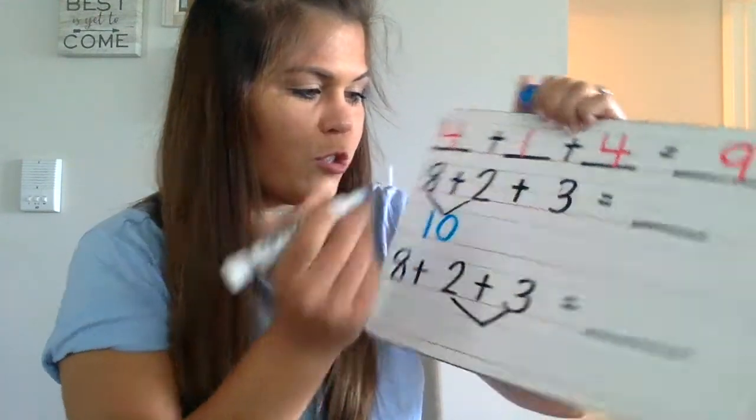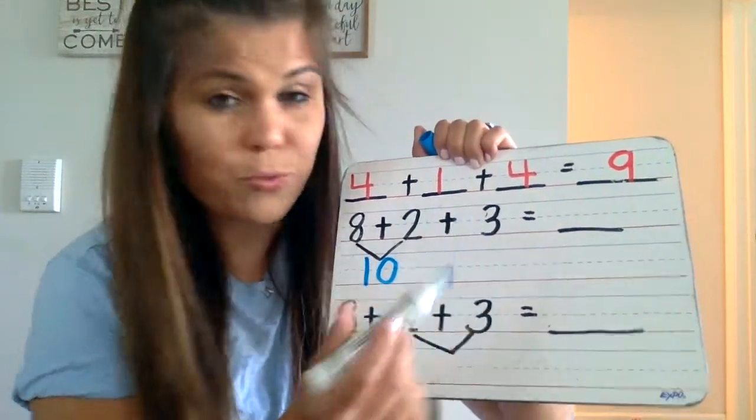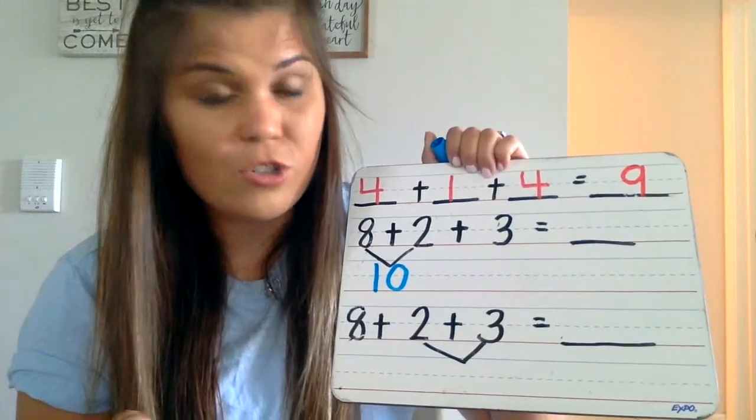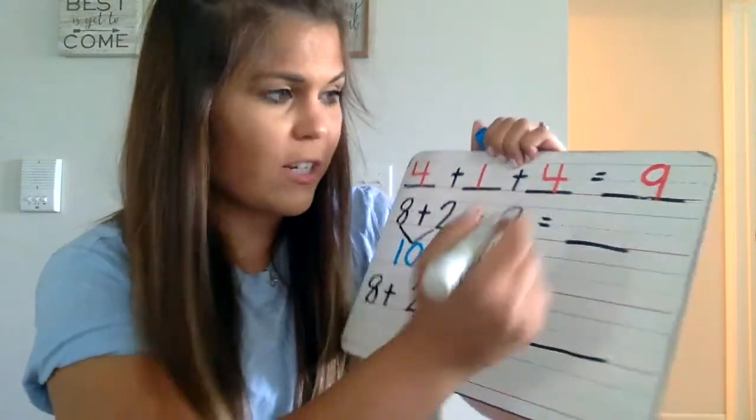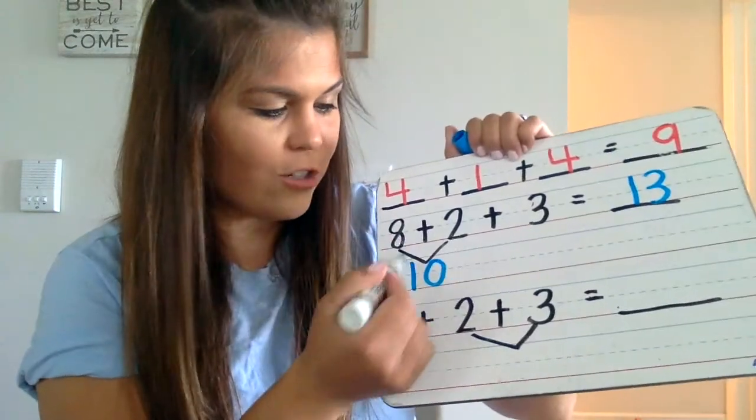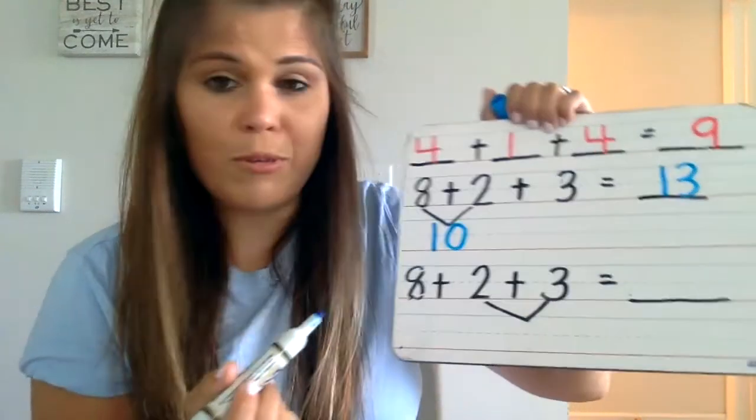If I know eight plus two equals 10, now I can do 10 plus three. Anything plus 10 is usually pretty easy to solve. 10 plus three equals 13. So I added two numbers together, then added the third addend, and I came up with my answer.